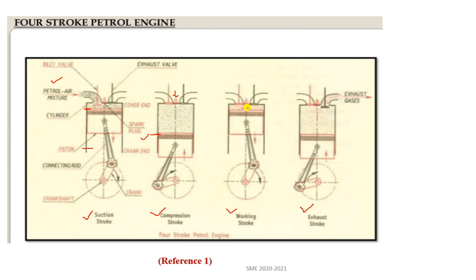Combustion releases a large amount of heat energy and gases, which force the piston downward from TDC to BDC — this is the working or expansion stroke. During the working stroke, both the inlet and exhaust valves remain closed. After the gases have done work on the piston, the crankshaft rotates through the connecting rod. The piston then moves from BDC back to TDC, and the exhaust valve opens.